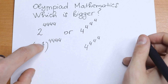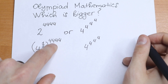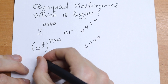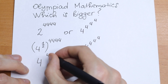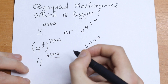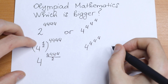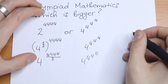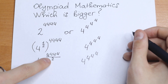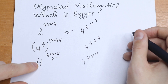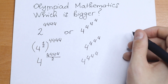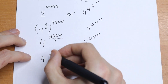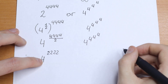Take a look. We need to multiply this. If we want to raise this to the power 4444, we need to multiply the exponents. We will have 4 to the power 4444 divided by 2. We will have 4 to the power 2222 on the left.